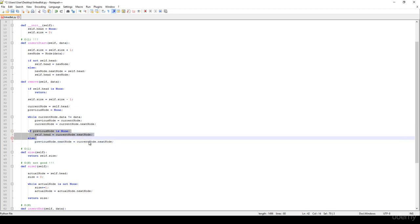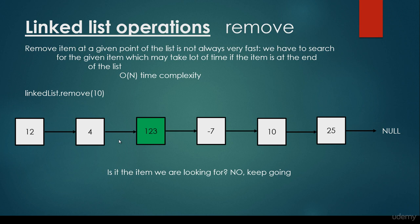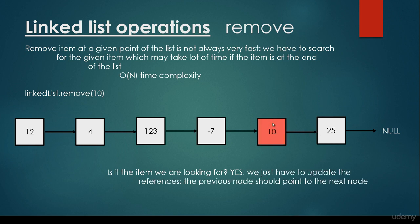This is what we have been discussing in the theoretical section. Let's suppose we would like to get rid of 10. 10 is approximately at the middle of the linked list. First we have to look for it, so we have to iterate through the linked list and search for that given item. Whenever we find it, we just have to set the previous node to point to the next node of that given node. That's why we get rid of this reference — we have to set it to null — and we just have to tell -7 to point to 25 directly.